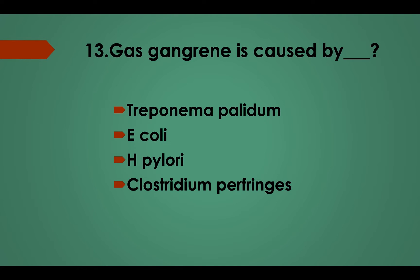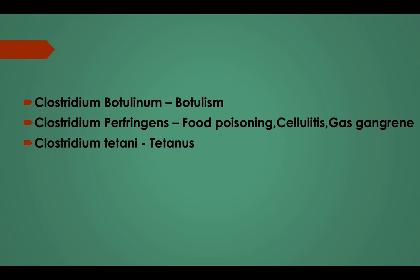Question No. 13: Gas gangrene is caused by: Option A, Treponema pallidum; Option B, E. coli; Option C, H. pylori; Option D, Clostridium perfringens. Answer: Option D, Clostridium perfringens. Clostridium botulinum causes botulism; Clostridium perfringens causes food poisoning, cellulitis, and gas gangrene; Clostridium tetani causes tetanus.